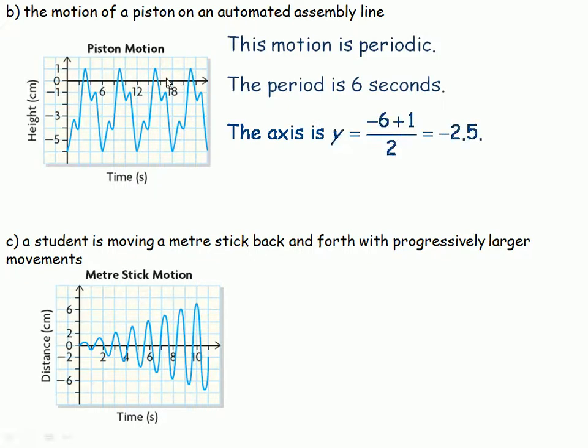The axis, where we go through the middle. Again, it's y equals the average of where a trough is and where a peak is, which is at negative 6 and positive 1. So negative 6 plus 1 would be negative 5, divided by 2 is negative 2.5. So that's the axis.